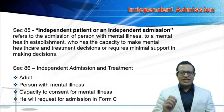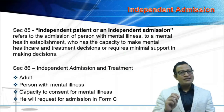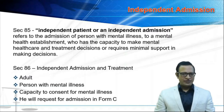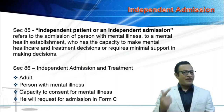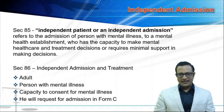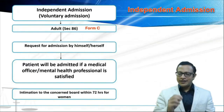Section 85 defines independent admission. Independent admission refers to the admission of a person with mental illness to a mental health establishment who has capacity to consent for treatment. Section 86 talks about the procedure: the person should be an adult, need to have a mental illness, should have capacity to consent for treatment, and will request for admission in form C.